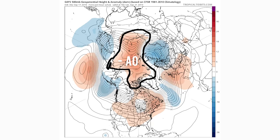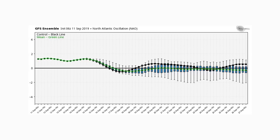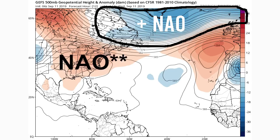Our NAO is currently very far positive and heading toward neutral or negative status. With a positive NAO, you see negative heights near Greenland and Iceland, and positive heights just to the west of Europe in the Atlantic Ocean. This leads to ridging in the eastern United States, which drives warmer temperatures there. This is a lot of why we're seeing that big heat wave in the eastern United States for this middle portion of September — this is basically what's happening right now.